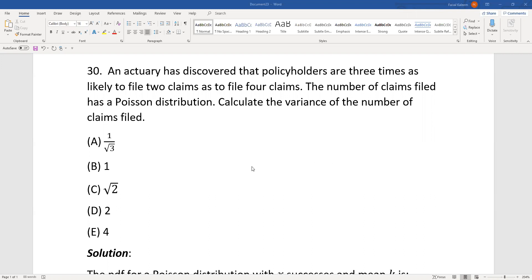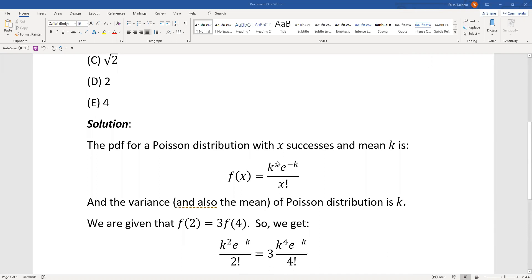The formula for a Poisson distribution with mean k is f(x) = (k^x * e^(-k)) / x!, where x is the number of successes, which in this case is the number of claims. The variance and also the mean of a Poisson distribution is k.